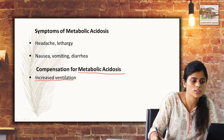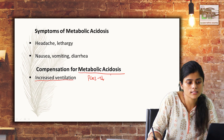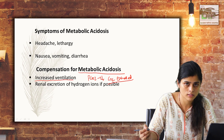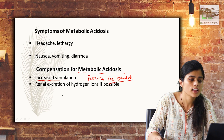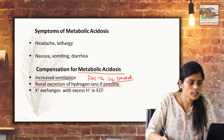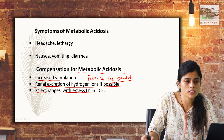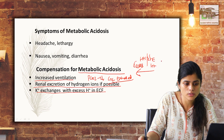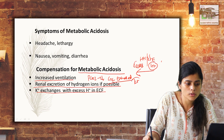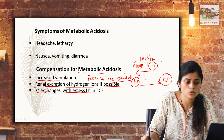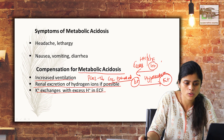Symptoms of metabolic acidosis include generalized weakness, depression of the CNS, headache, lethargy, nausea, vomiting, and diarrhea. The body compensates via the respiratory mechanism — increased ventilation decreases pCO2 by exhaling more CO2, preventing further pH reduction. There is also renal excretion of hydrogen ions if possible. Additionally, the H+/K+ exchanger causes H+ to enter cells while potassium shifts out, leading to hyperkalemia in acidosis.